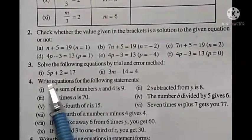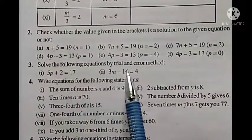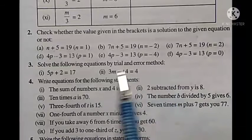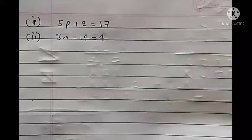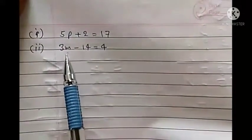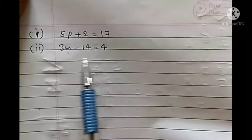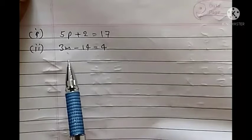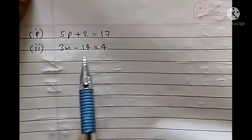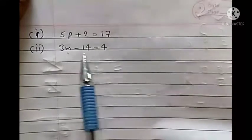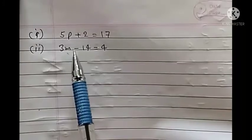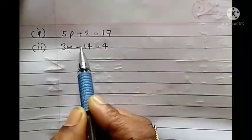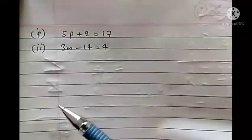Now let's see question number 3: Solve the following equations by trial and error method. In trial and error method, we have a variable, say m. We will put numbers like 0, 1, 2, 3, 4 one by one until both sides are equal. There are two questions — because of the minus, the second one needs more steps, so I'll do the second one so you can do the first.